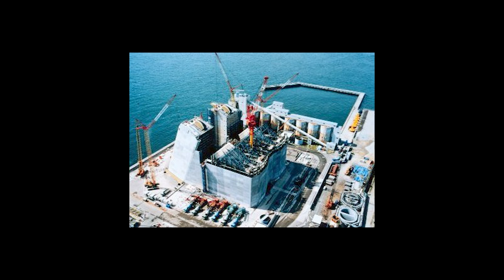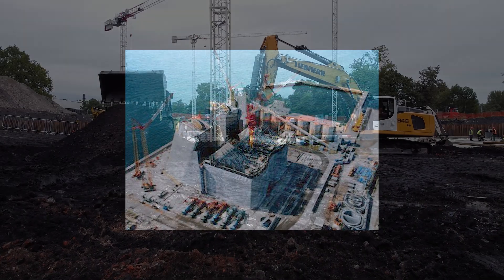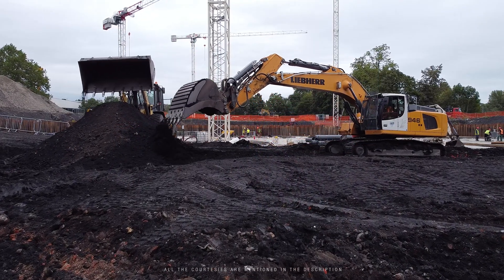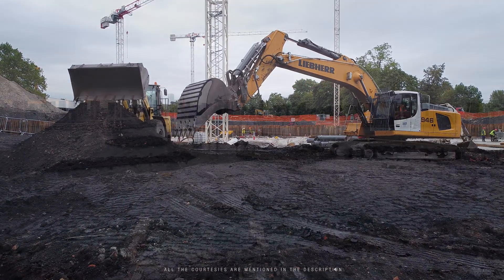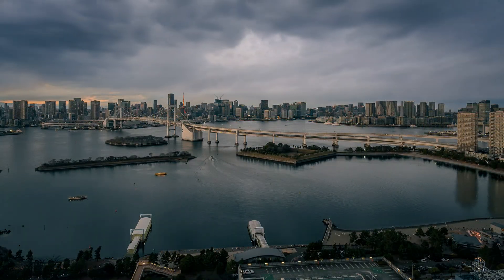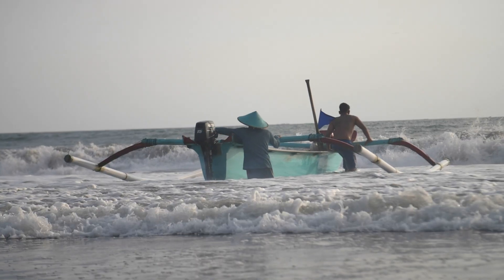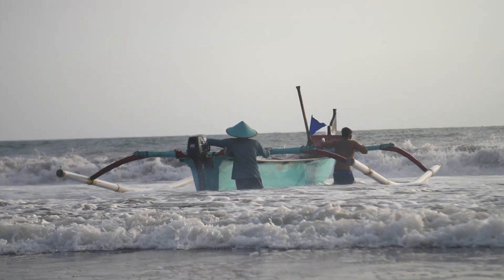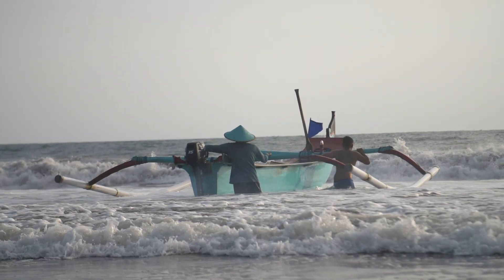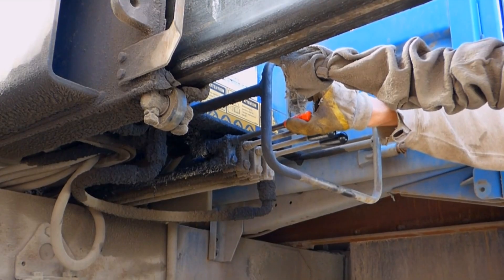Constructing the towers might seem like walking in a park, but not when the park is in a dangerous bay full of earthquakes and typhoons. Even during construction, they faced a real test — an earthquake in 1995 caused one of the towers to shift about a meter off course, but that turned out to be a tolerable deviation for the main cable.